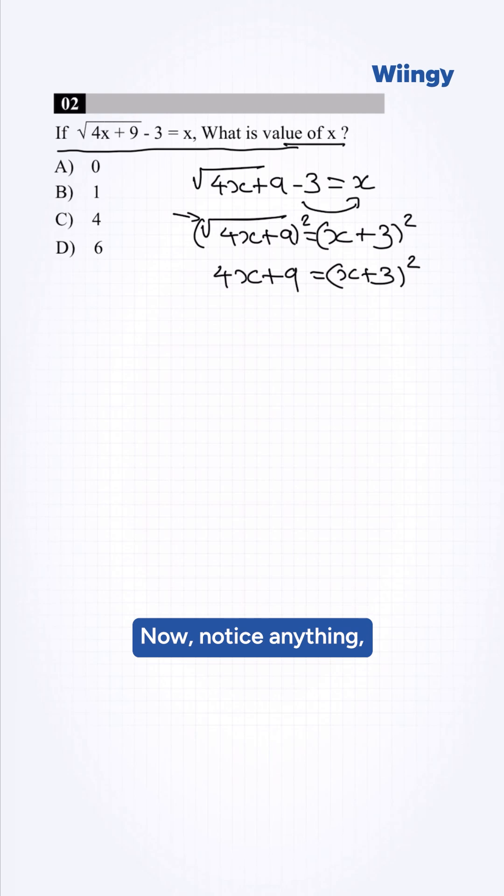Now notice anything? This is an algebraic identity. So this will become x² + 6x + 9. The left-hand side will be 4x + 9.